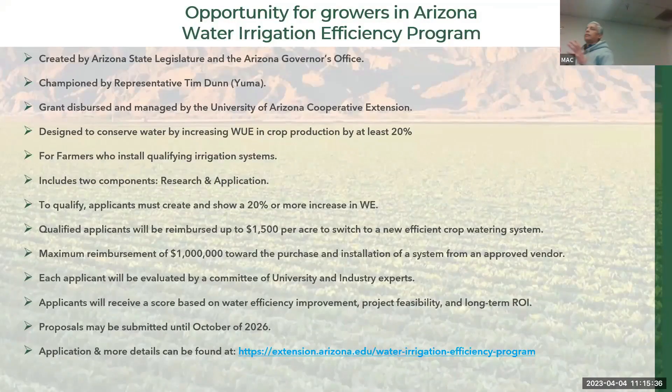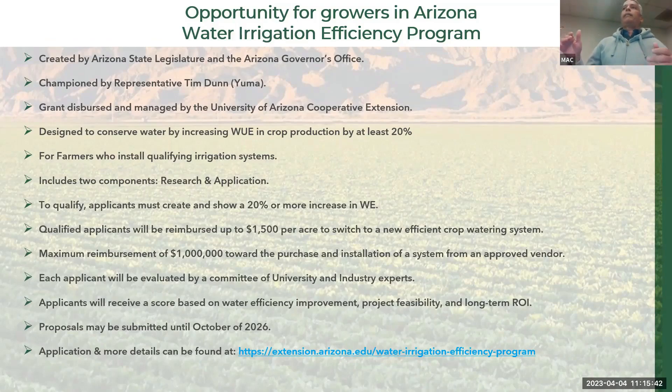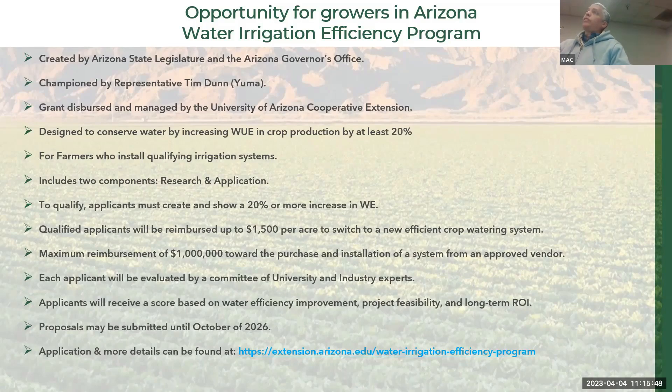The University of Arizona has a Water Irrigation Efficiency Program offering $1,500 per acre to improve irrigation efficiency, provided the new system can demonstrate at least a 20% water savings. There is a limit of $1 million per farmer. Interested farmers should apply soon, as funding is limited and most remaining funds may be approved at the next committee meeting.